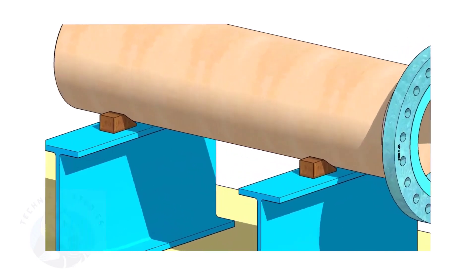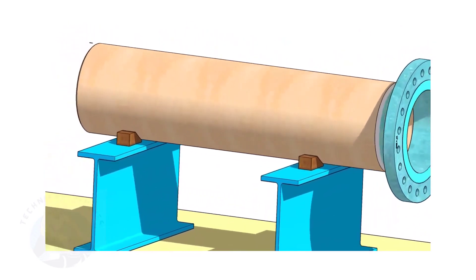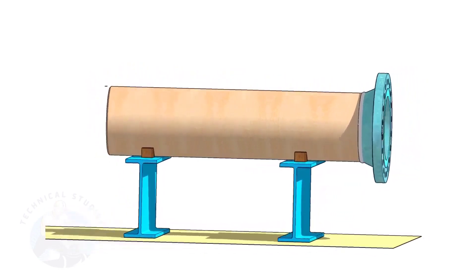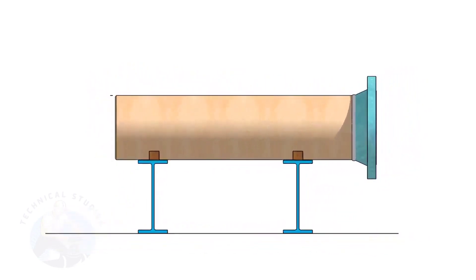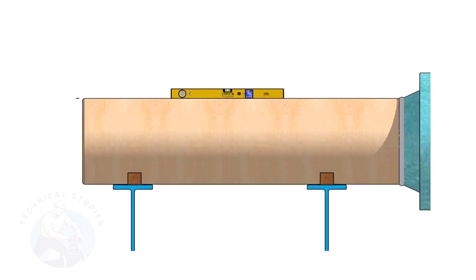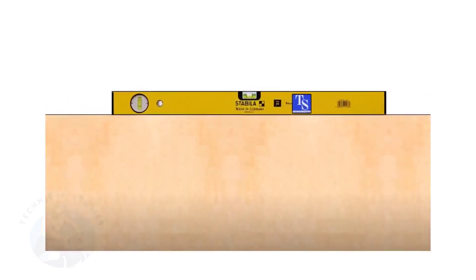Provide proper supports on both sides of the pipe to prevent rotation. Correct the level of the pipe. Check the plumbness of the flange a second time.